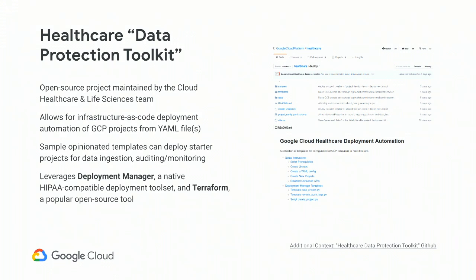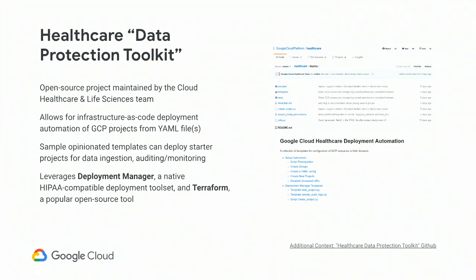Making a HIPAA-aligned project architecture is not impossible, but it is common. When our team looked at all these activities and said what goes into making a HIPAA-aligned project — controlling access, controlling encryption, controlling network boundaries, controlling audit logs — we created a set of open-source tooling unofficially called the data protection toolkit. It allows for infrastructure-as-code deployment of projects designed to meet organizational regulatory compliance requirements, leveraging Deployment Manager, which is a HIPAA-aligned service, and soon Terraform, which is a popular open-source toolkit.